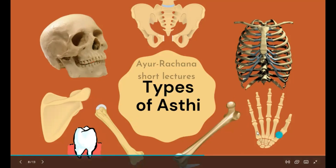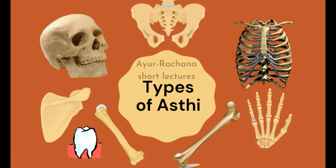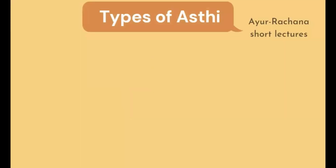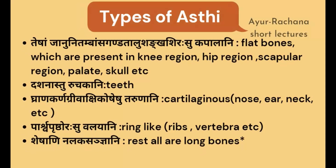Finally we have nalakasthi, where we find the long bones. The long bones of the body are considered to be coming under nalakasthi. So let's have a closer look at the types of asthi and the examples given by Acharya: teshaam janu nidambamsa, ganda talu shangashirasu kapalani.